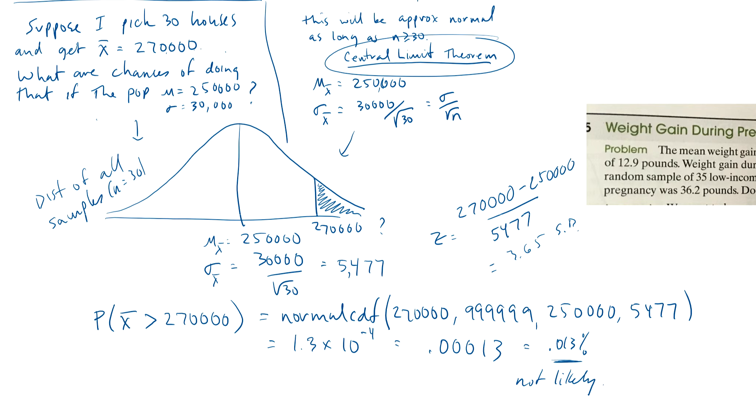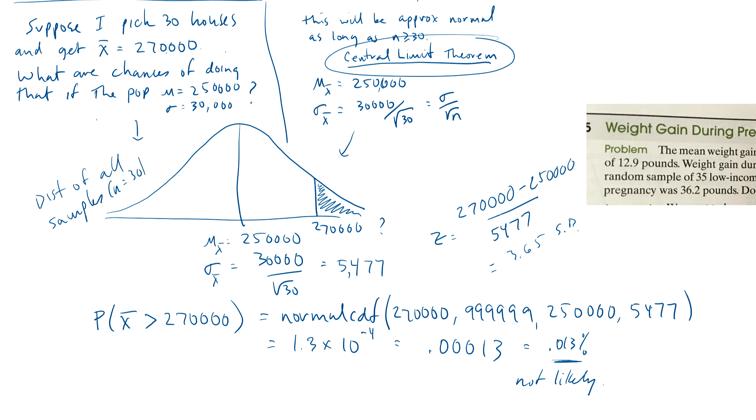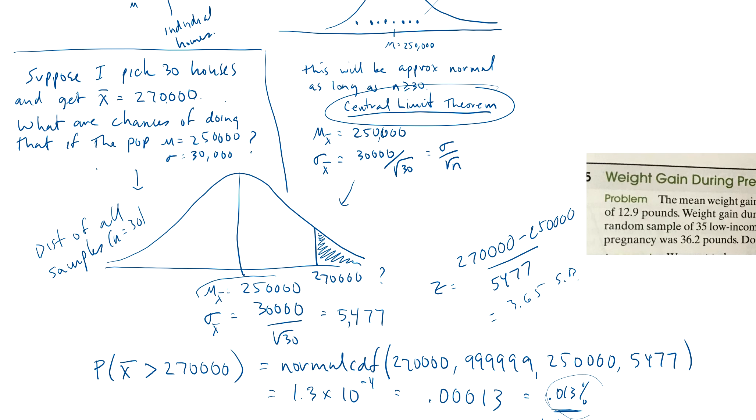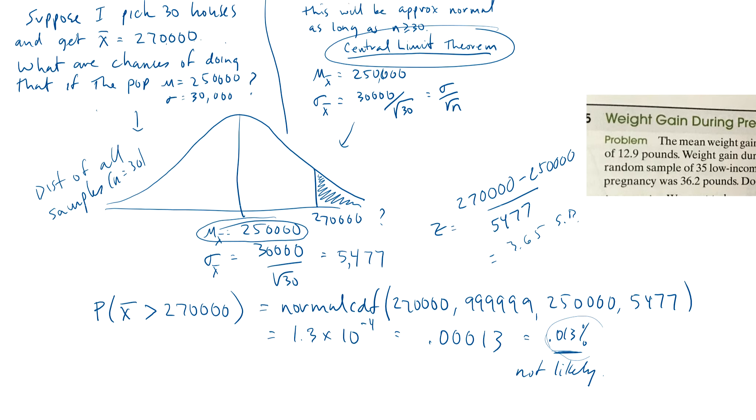So if it's not likely, what are the two conclusions you could make? The one conclusion is you could say, this is my lucky day. I can't believe that just happened, but it happened. I happened to get, you know, a sample, a random sample of 30, and it has a small chance of happening, but it did. Or your other conclusion could be, you know what? I don't think it's really 250,000. I think it's bigger than 250,000. I think maybe the real average is like 260 or 265 or something closer to where I'm at. That's where we're heading with it.